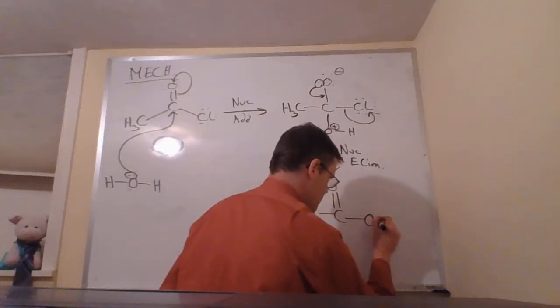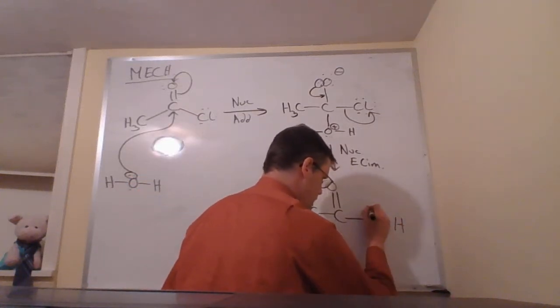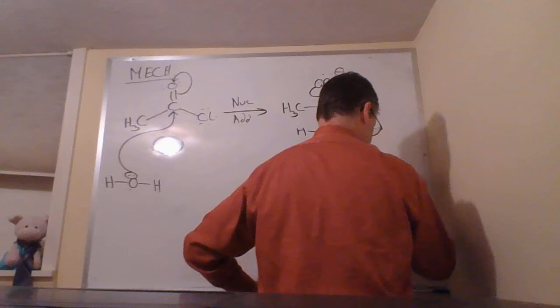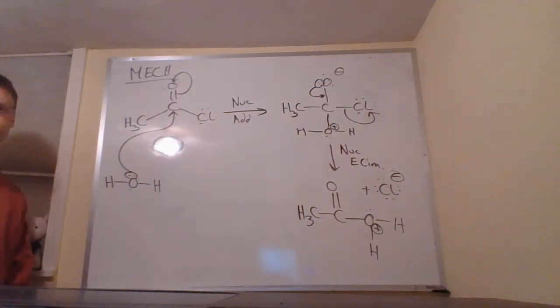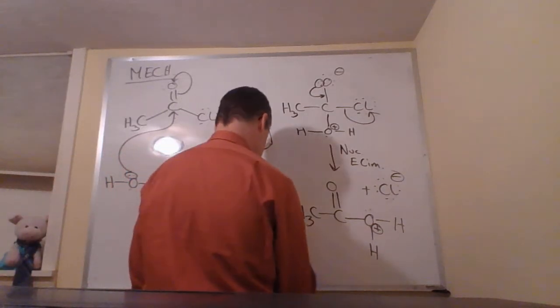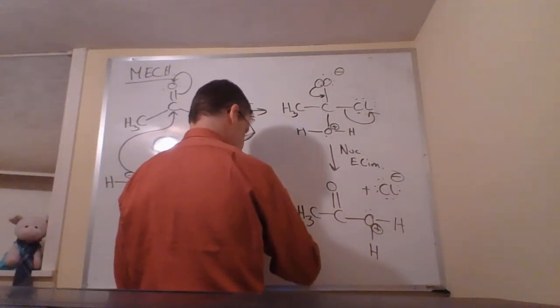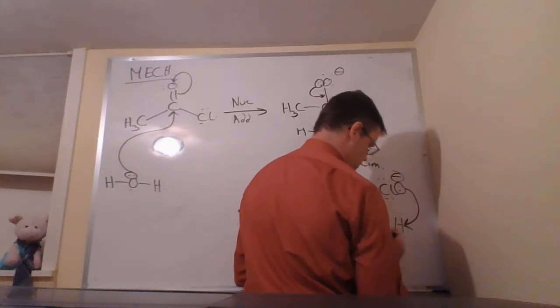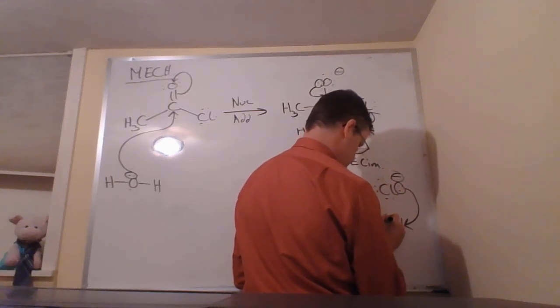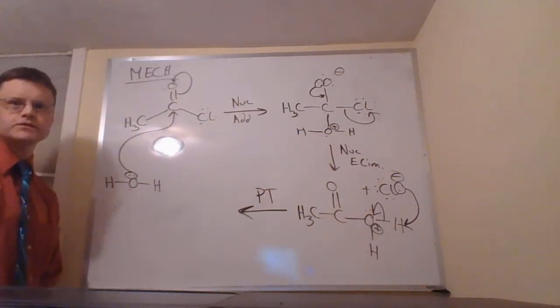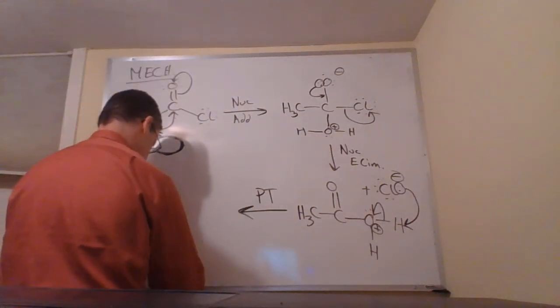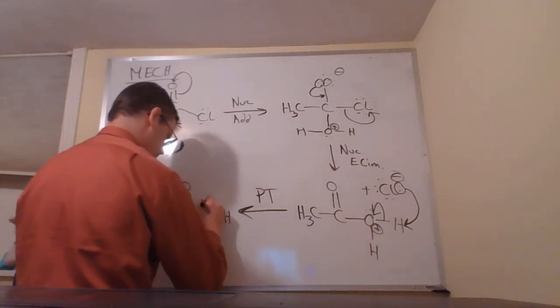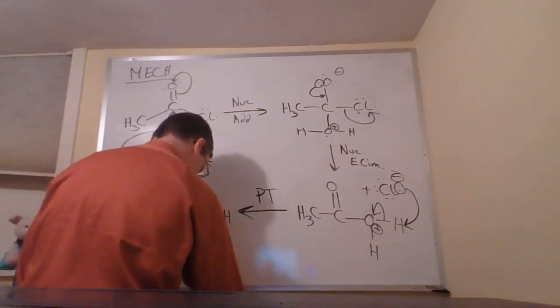Once I've done that, I have the protonated form of a carboxylic acid. And typically we don't leave intermediates in their protonated form. We end up usually in a neutral form. So we're going to remedy the situation with a proton transfer. A chloride ion can act as a Brønsted base. We can do a proton transfer here. And that gets us to acetic acid plus HCl.